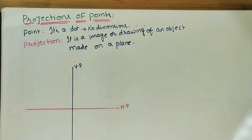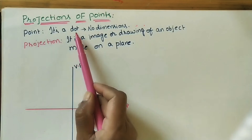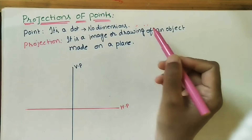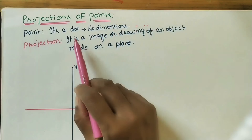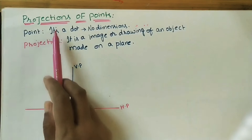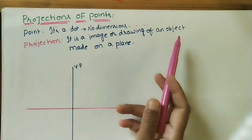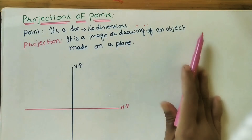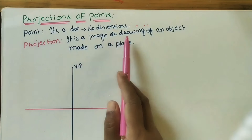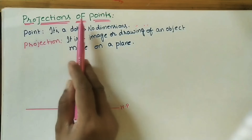Welcome to my channel. Let us discuss projections of points in engineering drawing. A point is a dot — it has no width, no height, and no thickness, so it has no dimensions. Projection means it is an image or drawing of any taken object made on a plane. Here we are doing the images of points.